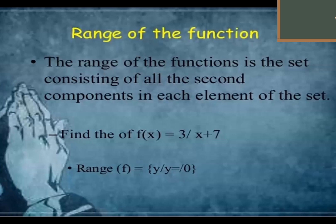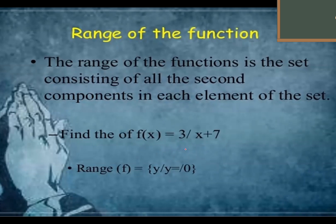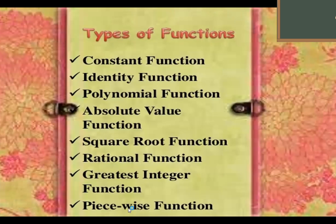For the range, that is the possible value of y after you substitute the x. Since you have the equation 3 over (x + 7), the value of your y is not equal to 0. So the range here — all the numbers except 0. Your y must not be equal to 0. So let's review the different types of function.